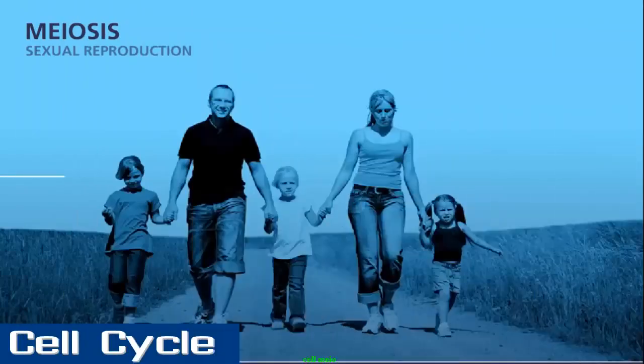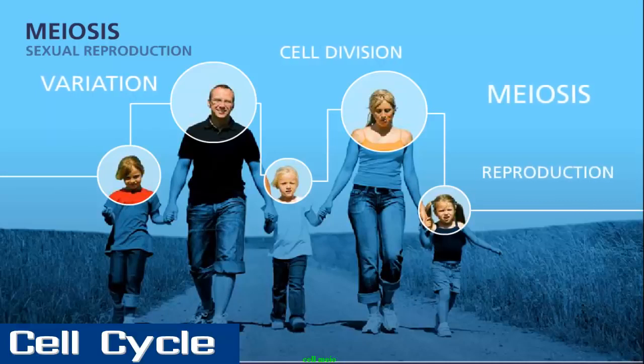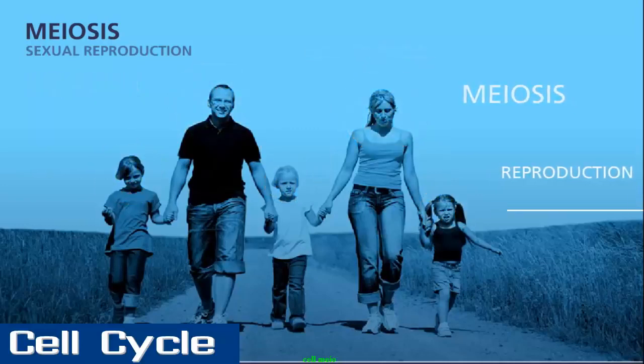Have you ever wondered why children do not look exactly like their parents, or why some siblings look so different from each other? The answer lies in the process of meiosis, which generates the gametes for reproduction.